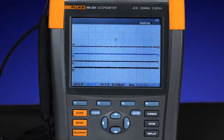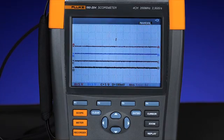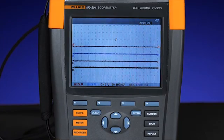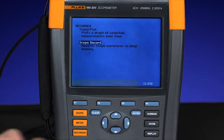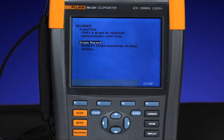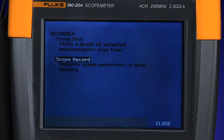In order to capture the waveforms on the four inputs at the startup sequence of the machine, we'll go in and use the oscilloscope in the scope record mode. The scope record mode will capture the high resolution digitized waveform over an extended period of time. It can capture an event of recorded waveforms for as long as 24 hours.